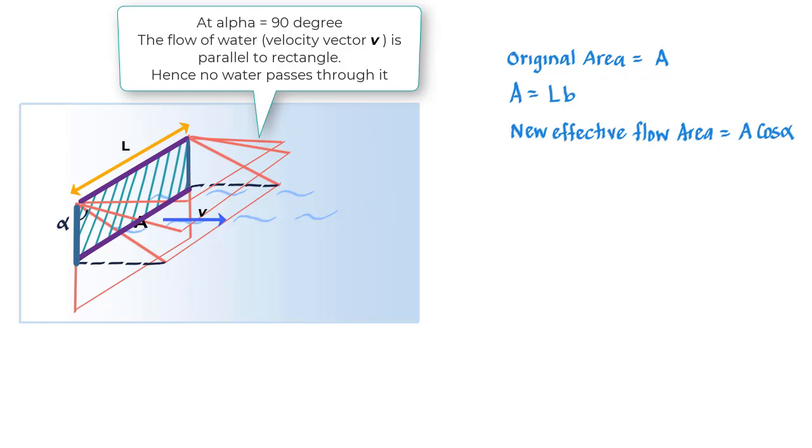If the original length was L and the breadth was B, the B value is now actually just B cos alpha while L is still the same. So the new area you get is LB cos alpha, which is equal to A cos alpha.